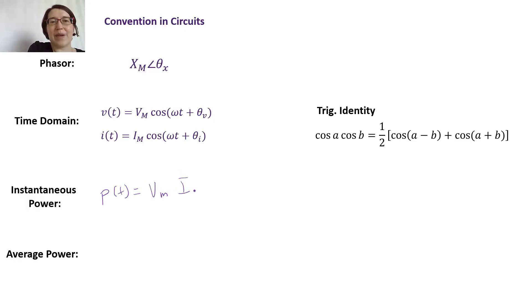Here's our setup again and here's our handy dandy trig identity to help us with the calculation. So let's just go through it. We have our power, we're just going to multiply the two together. So we're going to get VM and then IM here and we're going to get cosine of omega t plus theta V and then multiply by cosine of omega t plus theta I. So that's just putting them together, collecting some of the terms.